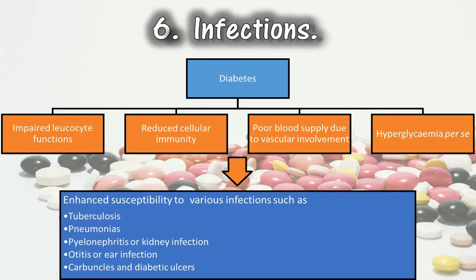6. Infections. Due to various factors such as impaired leukocyte functions, reduced cellular immunity, poor blood supply due to vascular involvement, and hyperglycemia per se, diabetics have enhanced susceptibility to various infections such as tuberculosis, pneumonias, pyelonephritis or kidney infection, otitis or ear infection, carbuncles, and diabetic ulcers.